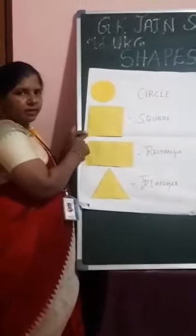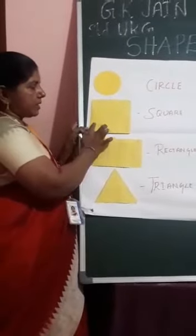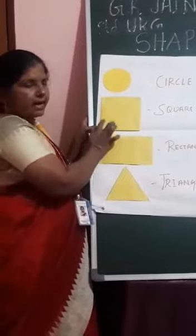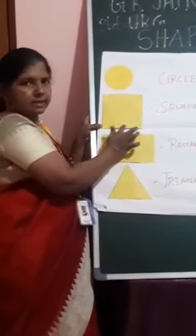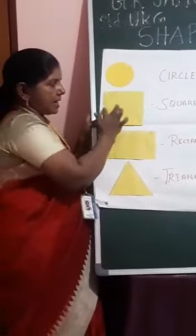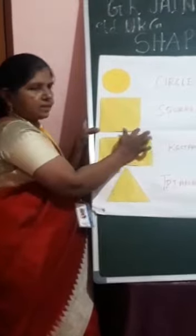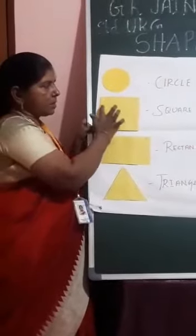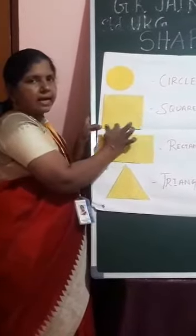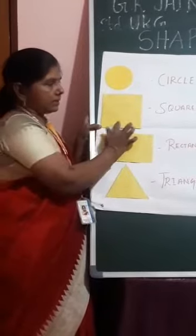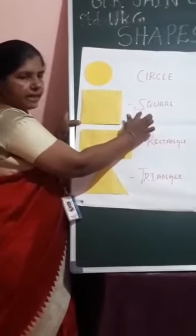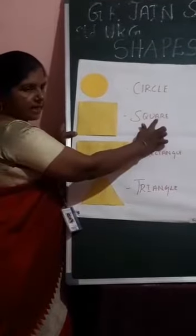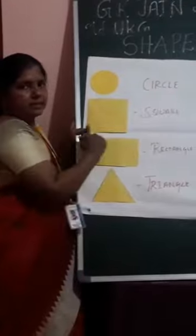Listen children. The second one is square. Square has four sides and four corners. Four sides and four corners. The four sides are equal. Square has four sides and all four sides are equal. The spelling: S-Q-U-A-R-E. Square.